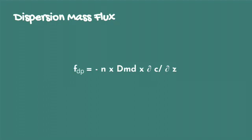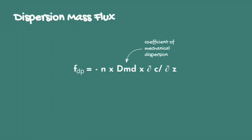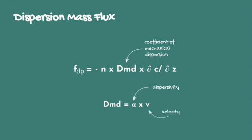Although this movement is completely different from diffusion, for practical purposes, the dispersion mass flux can be mathematically modeled like diffusion, as you can see in this equation, where DMD is the coefficient of mechanical dispersion. This coefficient is a function of the dispersivity and the groundwater velocity.